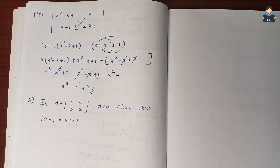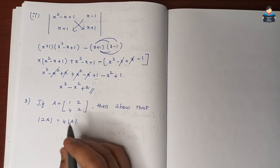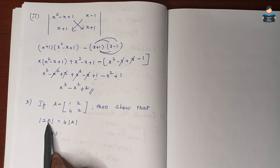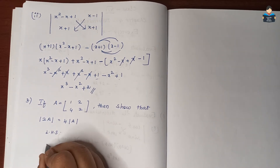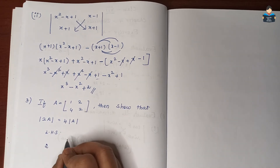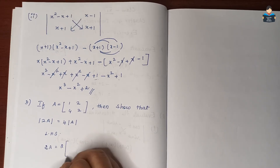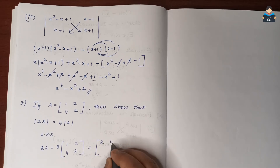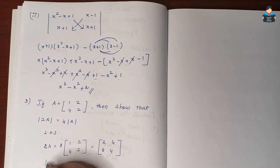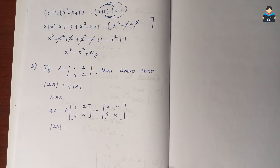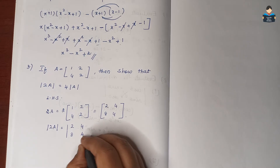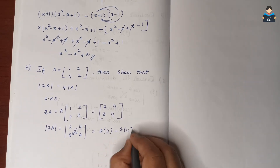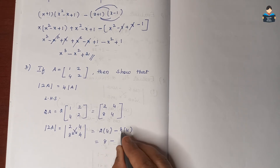For the LHS, we need det(2A). First we form the matrix 2A by multiplying 2 into each element of A, giving 2A = [[2, 4], [8, 4]]. Now taking the determinant: 2 into 4 minus 8 into 4 equals 8 minus 32, which is minus 24.